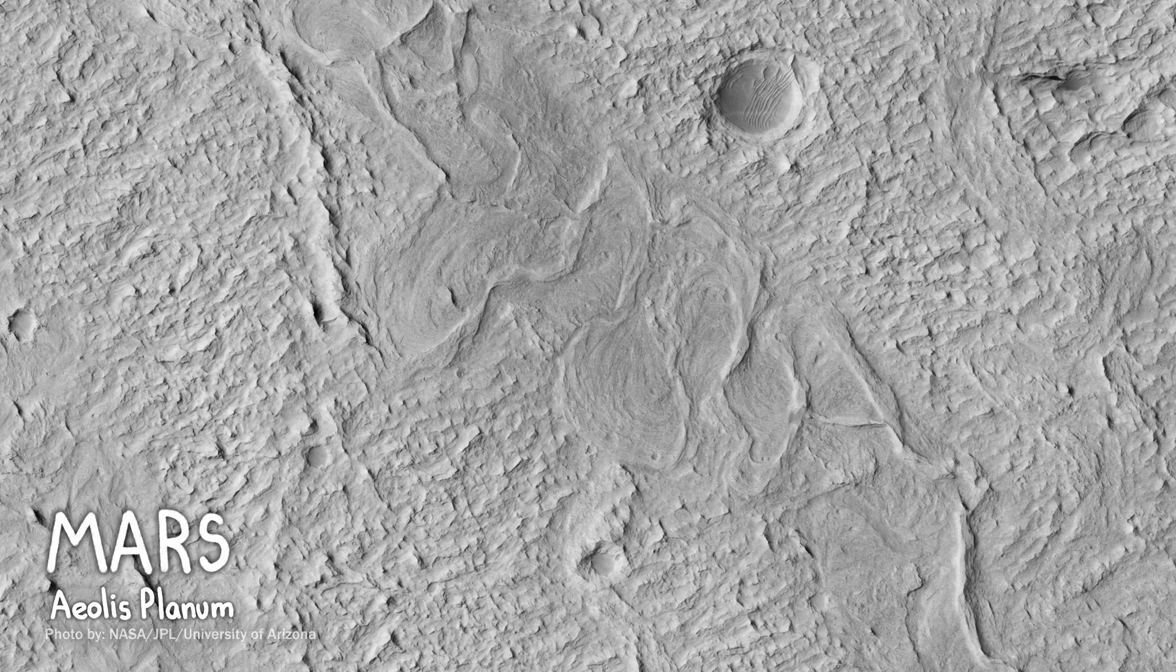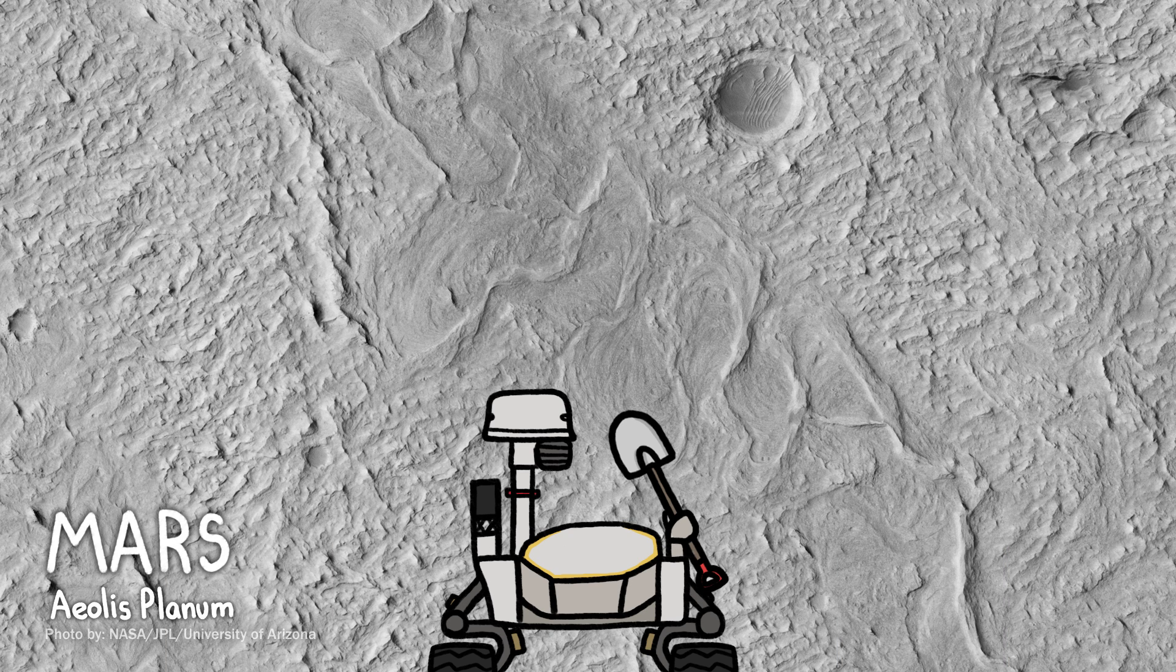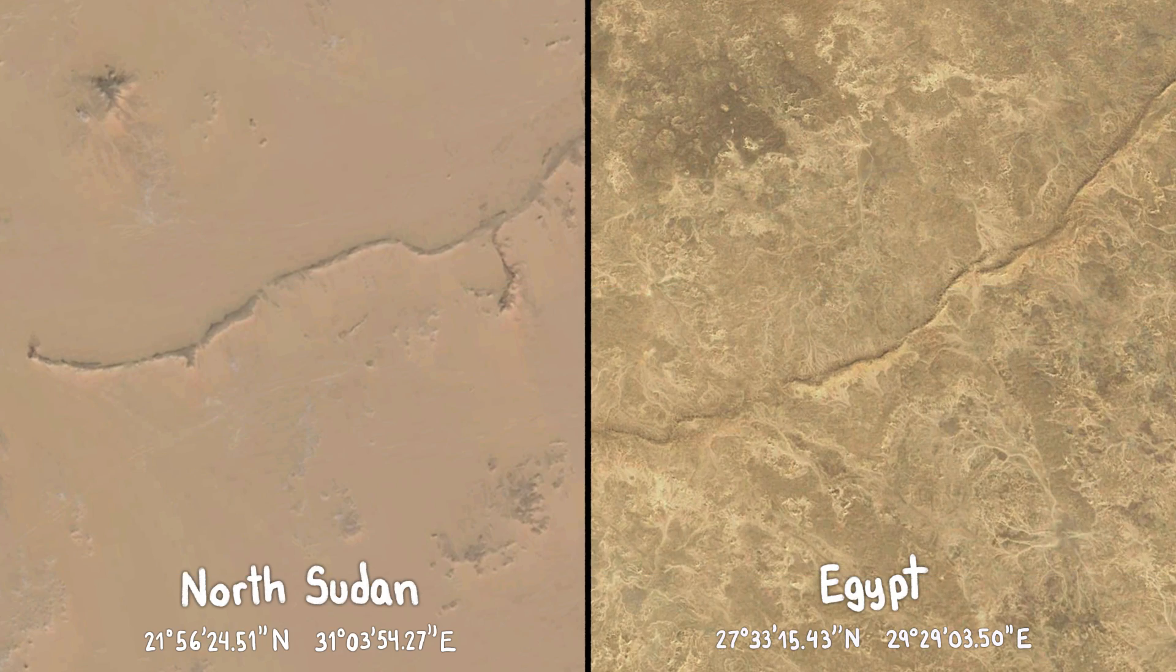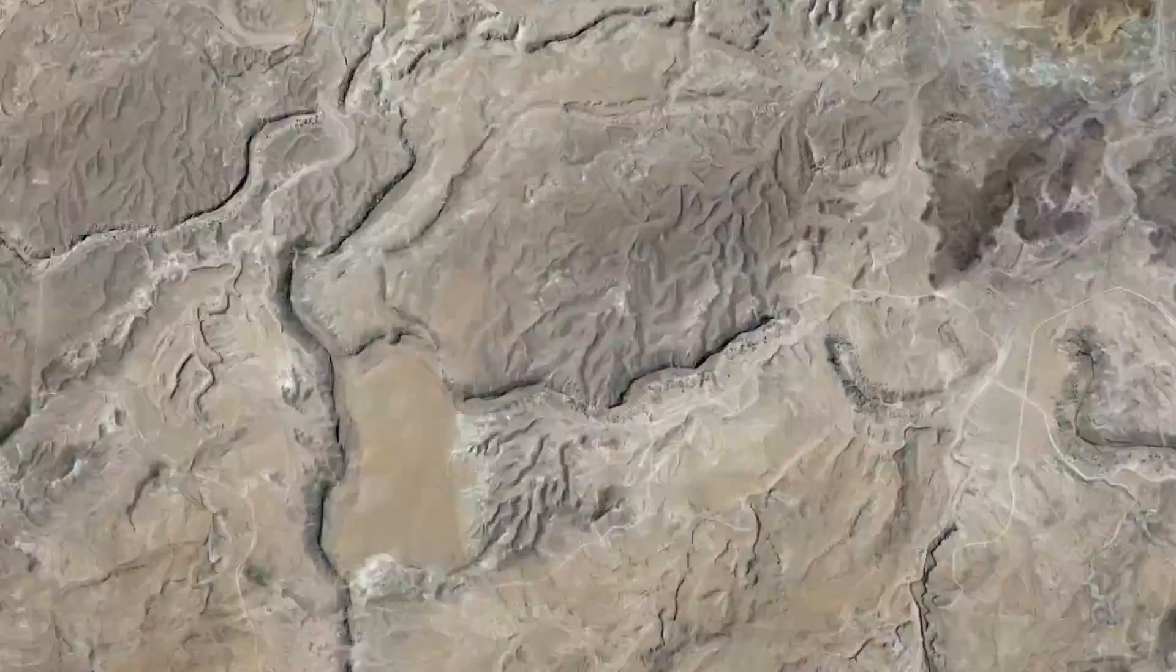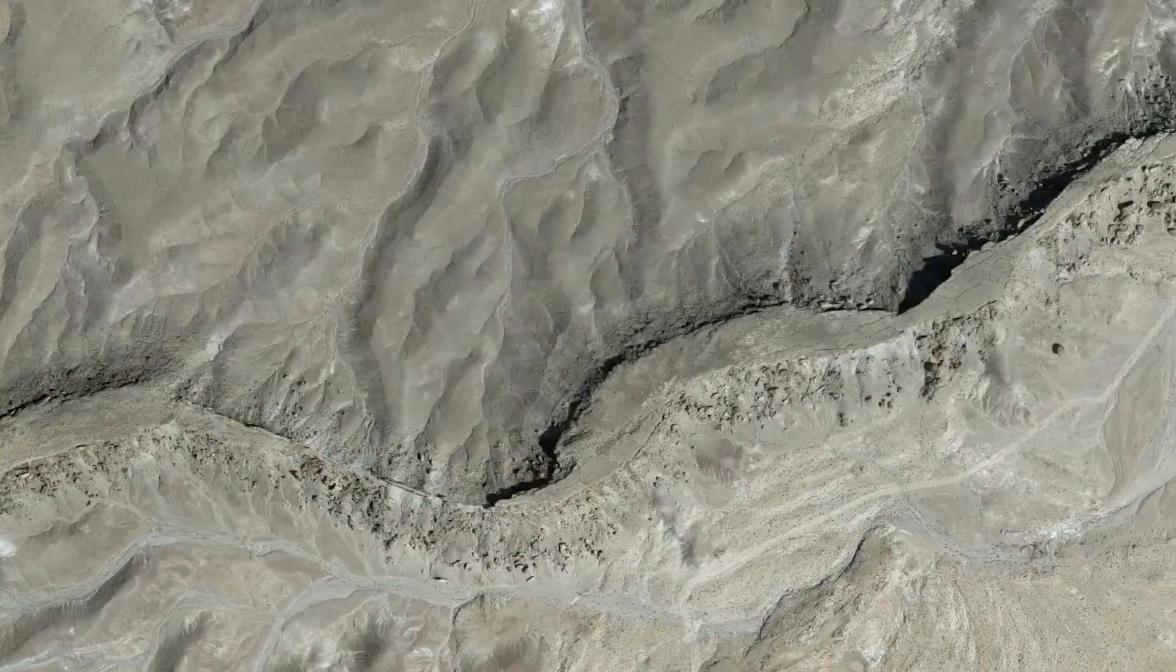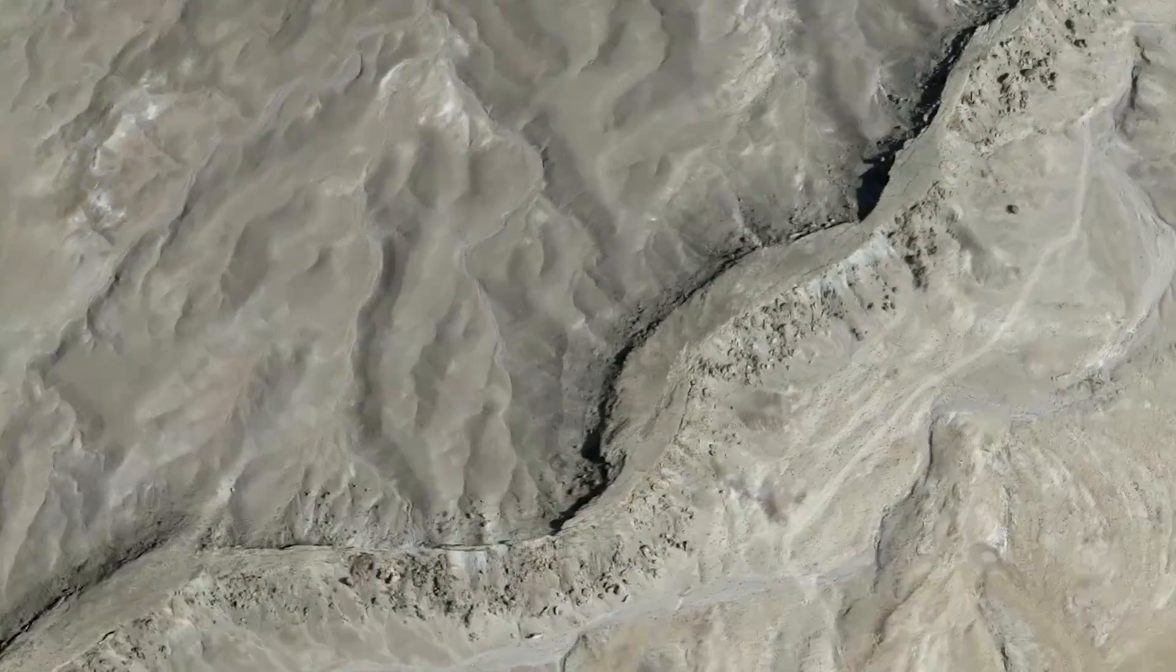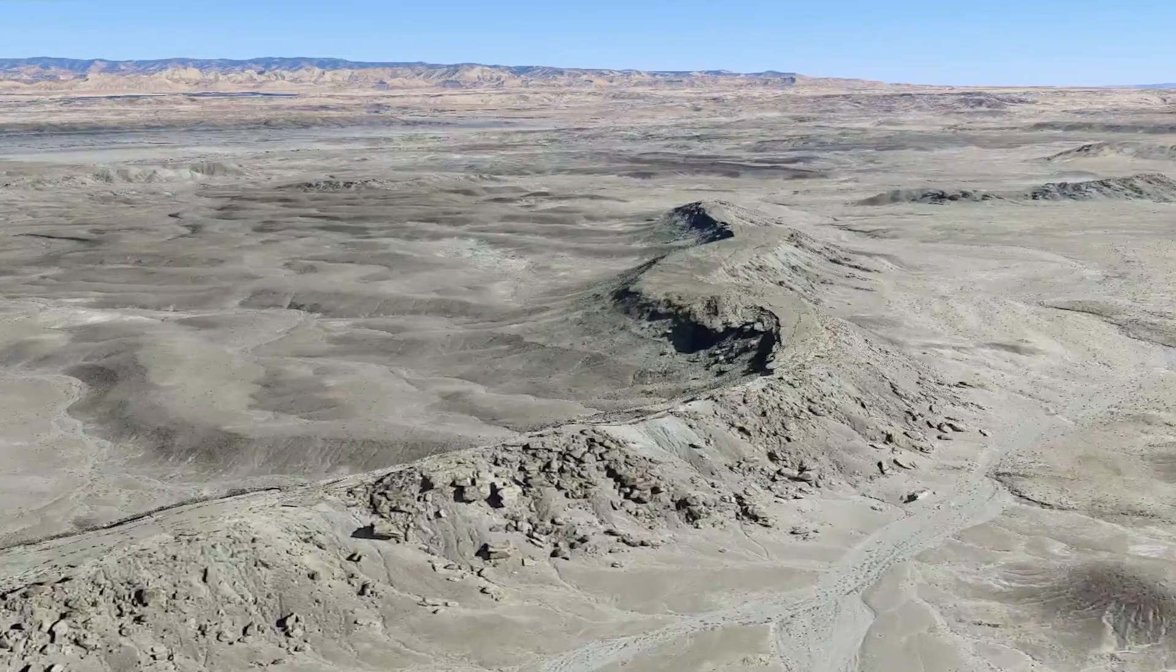We can't know exactly how this riverbed got turned inside out without getting down on the ground and digging around a little, but we can make some pretty good guesses by studying inverted relief on our home planet. You can even find your own examples on Google Earth. Just be warned that trying to figure out what's right side up and upside down will turn your brain inside out.